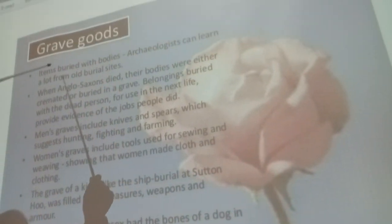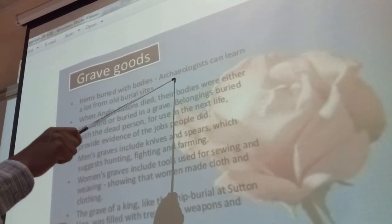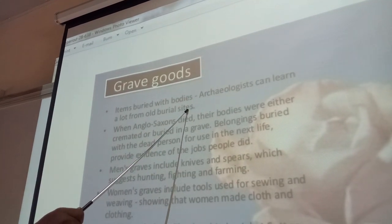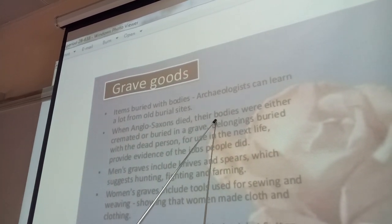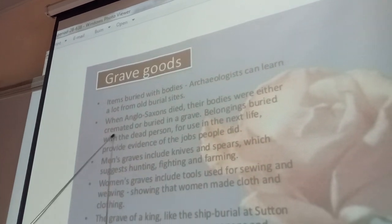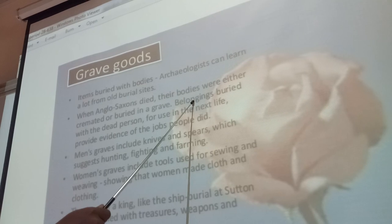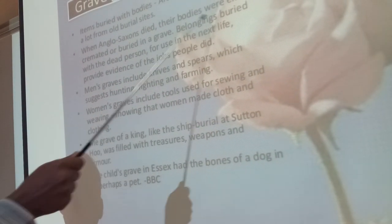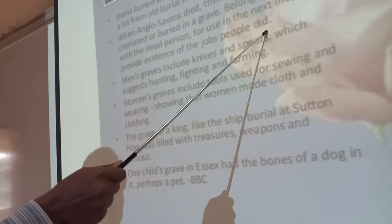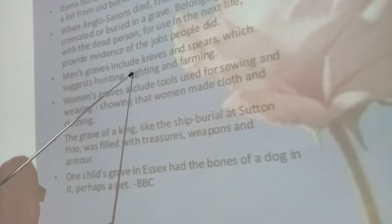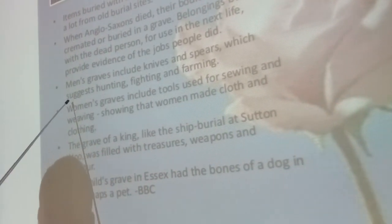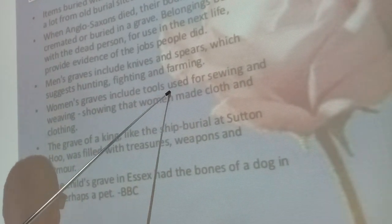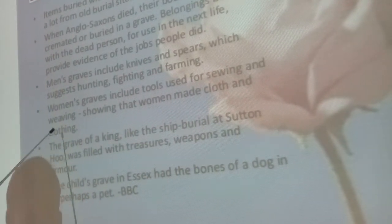Grave goods — items buried with bodies: archaeologists can learn a lot from old burial sites. When Anglo-Saxons died, their bodies were either cremated or buried in a grave along with their belongings for use in the afterlife. Men's graves included knives and spears, suggesting hunting, fighting, and farming. Women's graves include tools used for sewing and weaving, showing that women made cloth.